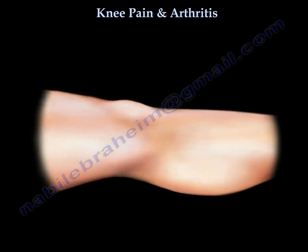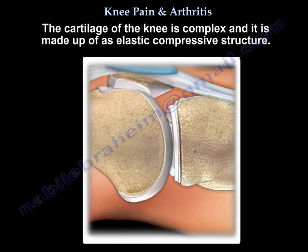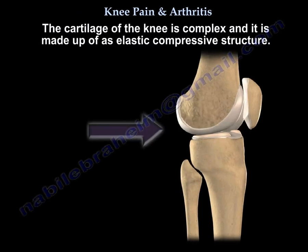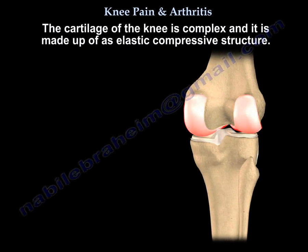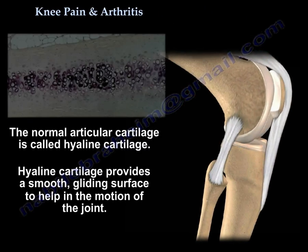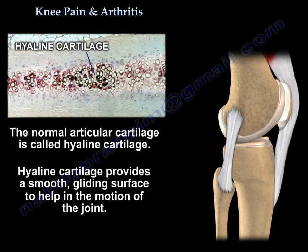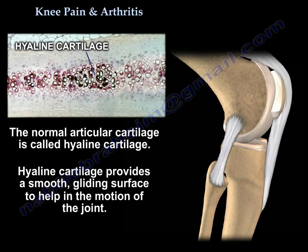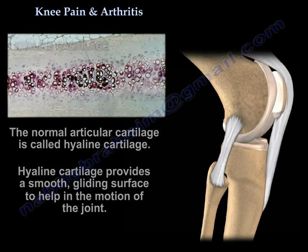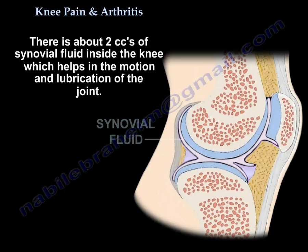The cartilage of the knee is complex and is made of an elastic, compressive structure. The normal articular cartilage is called hyaline cartilage. It provides a smooth gliding surface to help in the motion of the joint. There is about 2 cc of synovial fluid inside the knee that helps in the motion and lubrication of the joint.